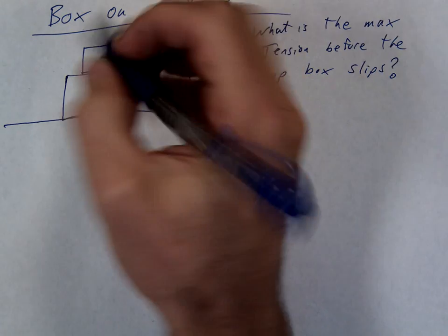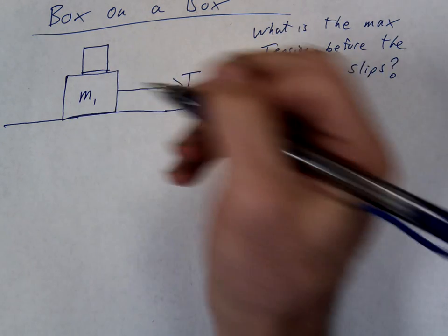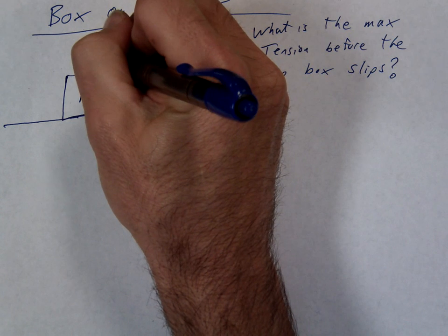We're going to pull on this bottom box. Let's call this bottom box M1. We'll call the top box M2.